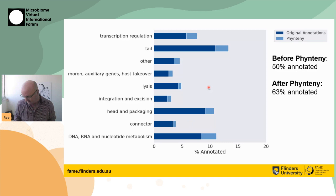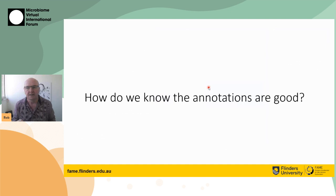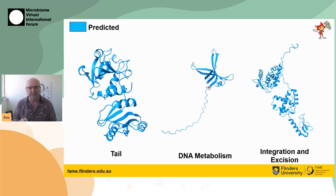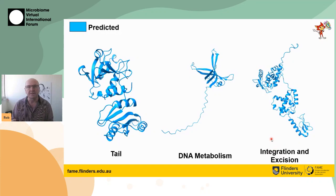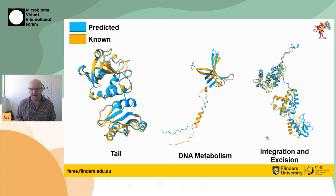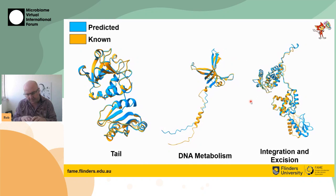That leads us to an obvious question: how do we know those annotations are any good? Susie took some of the predictions — here's a protein predicted to be a tail fiber, a protein predicted to be involved in DNA metabolism, and a protein predicted to be involved in integration and excision. We used ColabFold to generate the structures of those proteins, and then FoldSeek to search through the database of known protein structures from all AlphaFold predictions. What we find is great overlap between our predicted proteins in blue and the known structures in gold — so we're using AlphaFold predictions to come up with better annotations of our phage genomes.